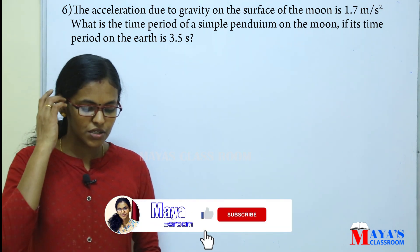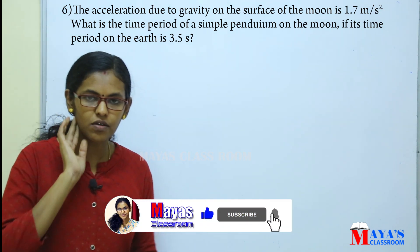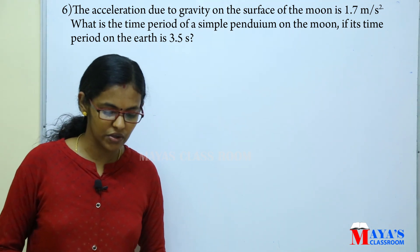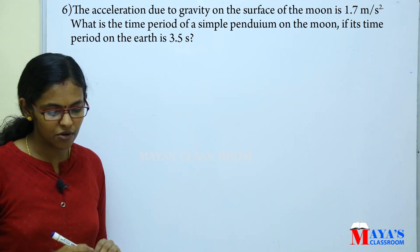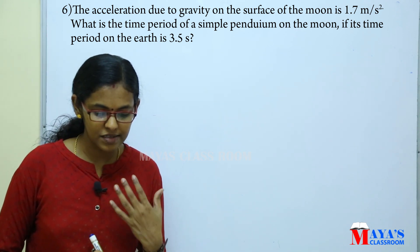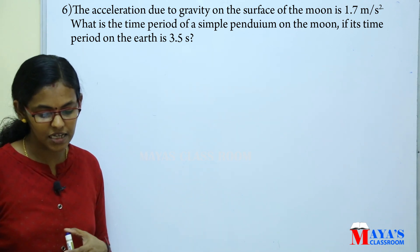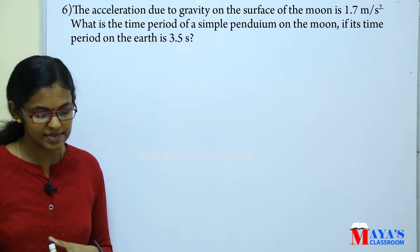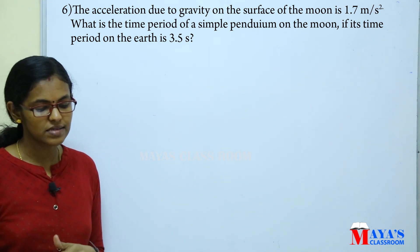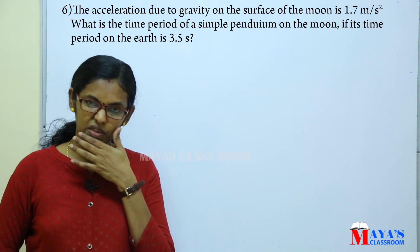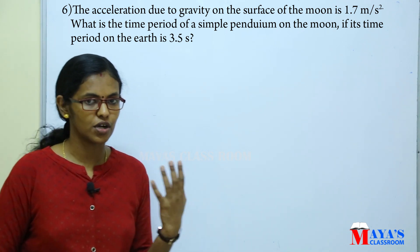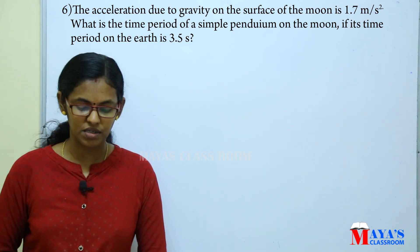The acceleration due to gravity on the surface of the moon is 1.7 metres per second squared. What is the time period of a simple pendulum on the moon if its time period on the earth is 3.5 seconds?